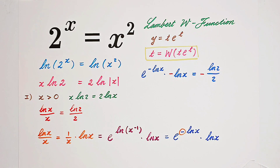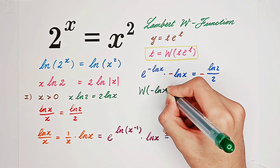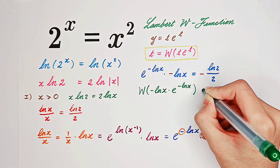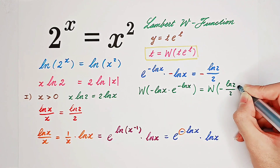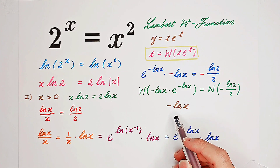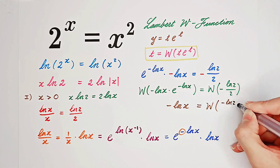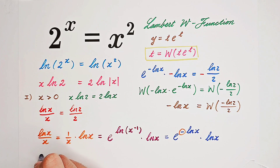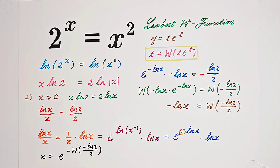If we take the Lambert W function on both sides, on the left-hand side we get the Lambert W function of negative the natural log of x times e to the power of negative the natural log of x. On the right-hand side, the Lambert W function of a constant is also a constant. The left-hand side simplifies to negative the natural log of x, according to the formula. Now we can solve for x. In our first case, x is e to the power of negative the Lambert W function of negative natural log of 2 over 2.